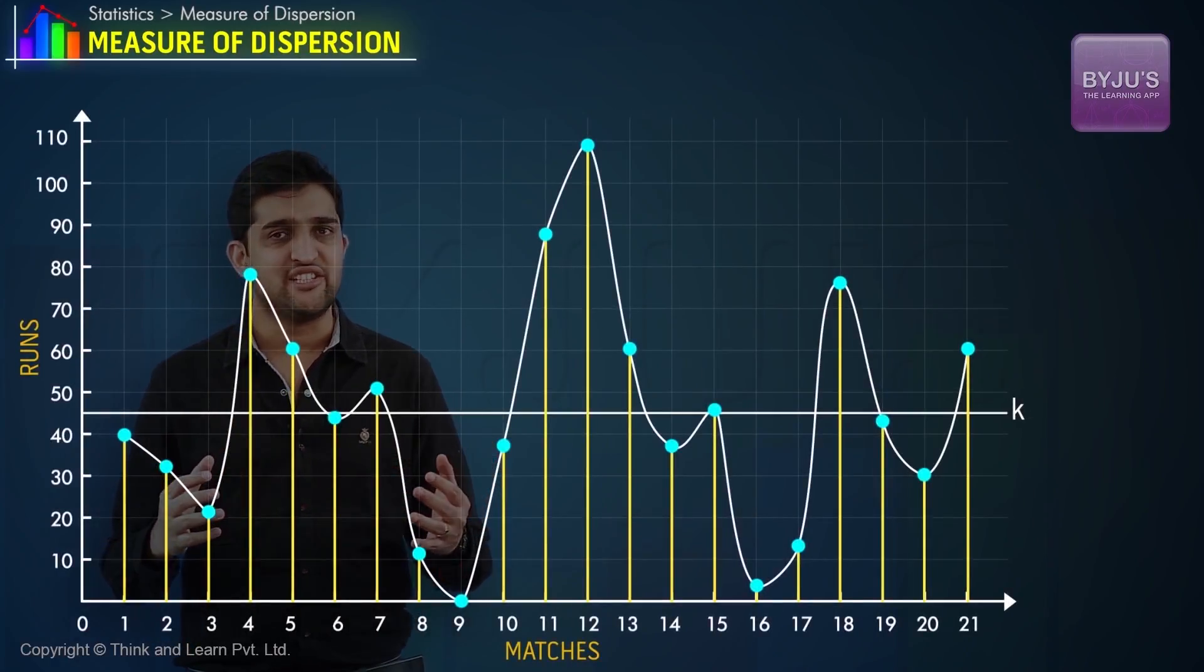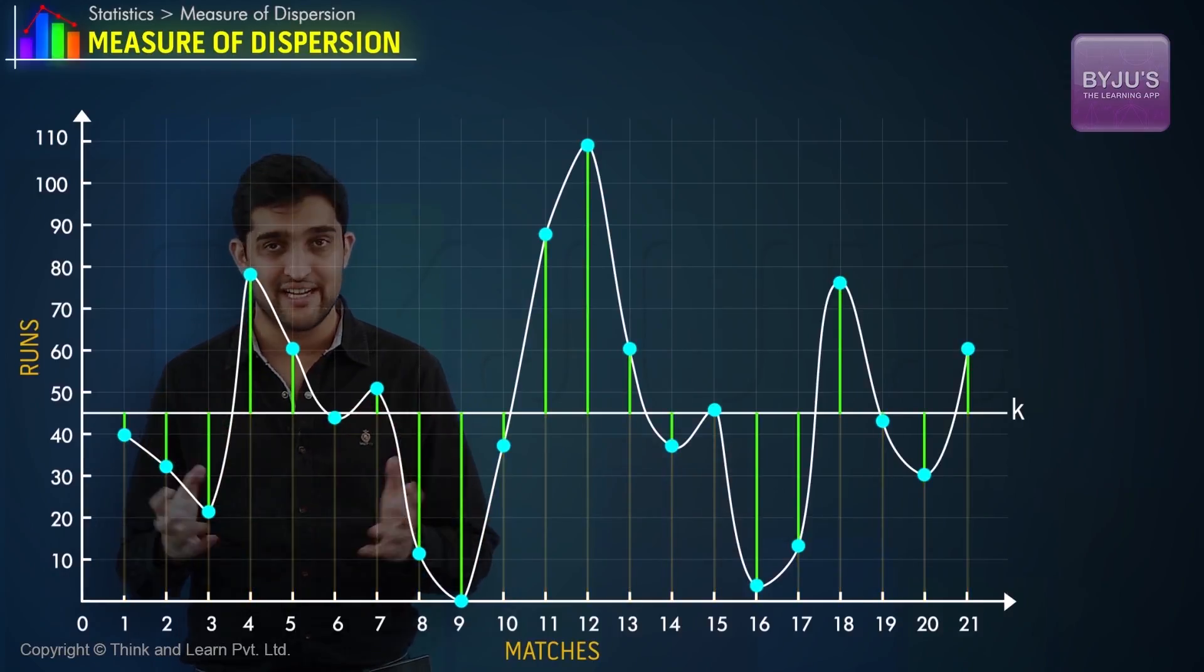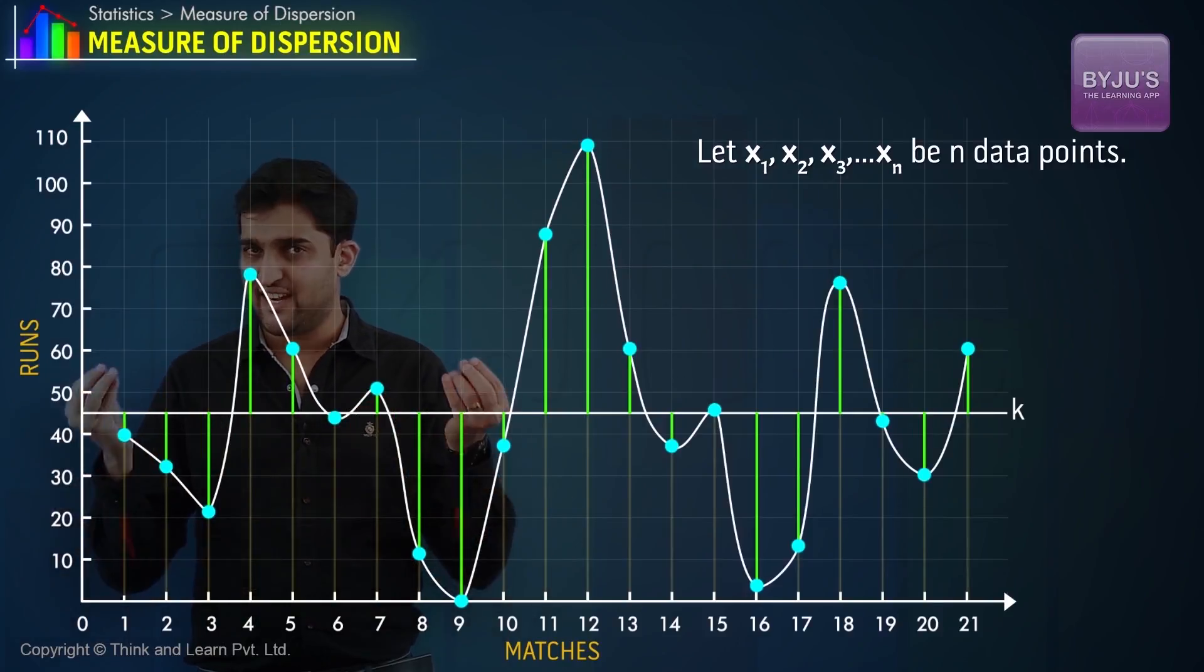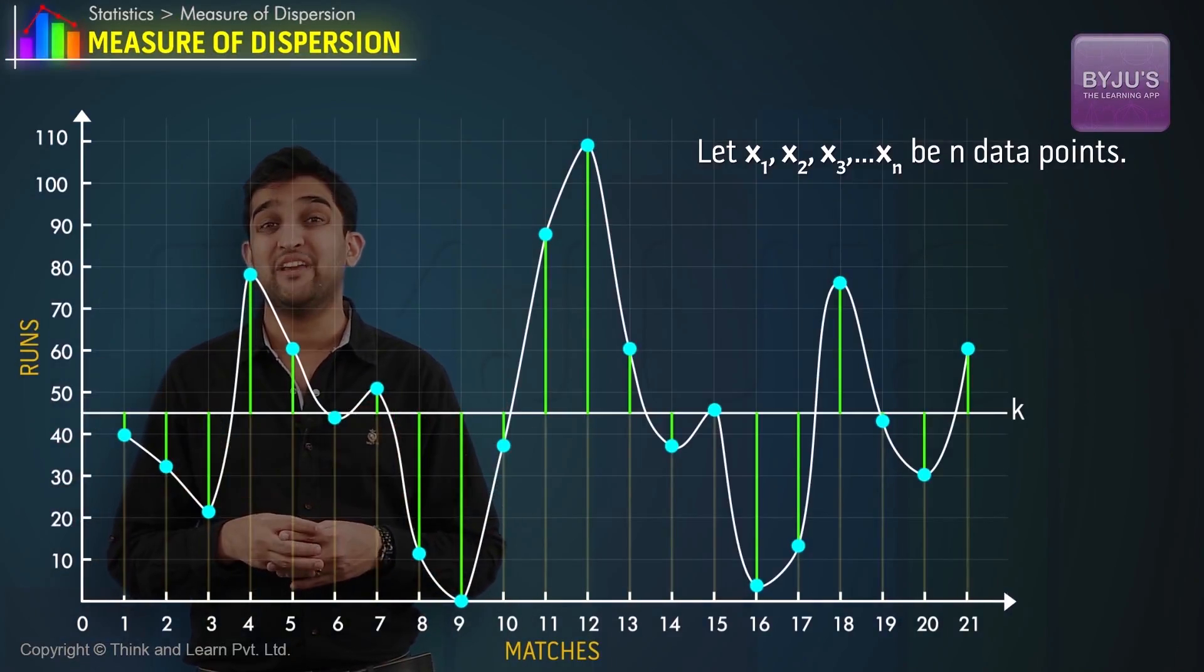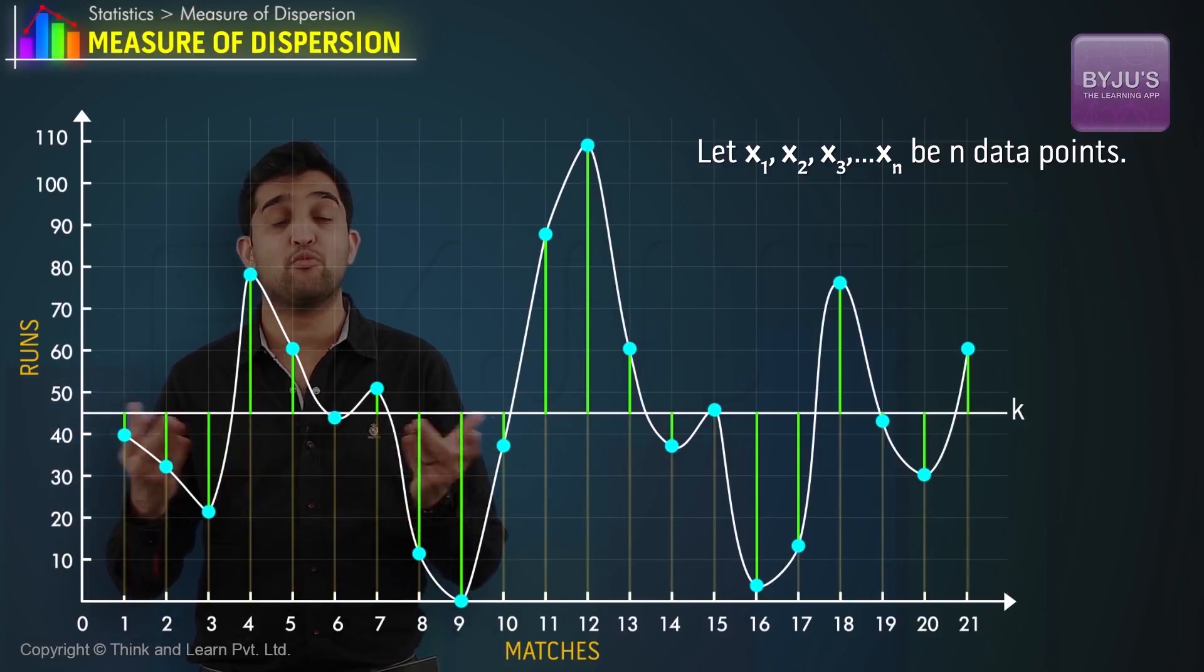Mean deviation is taking the mean of deviations about a central tendency. Let x1, x2, so on until xn be n data points in a distribution, and k be its central tendency. The central tendency could be mean, median, or mode.